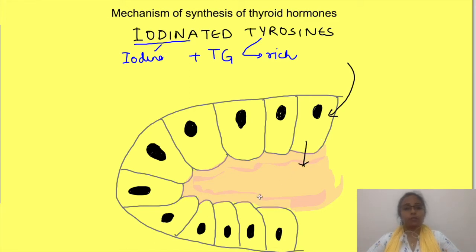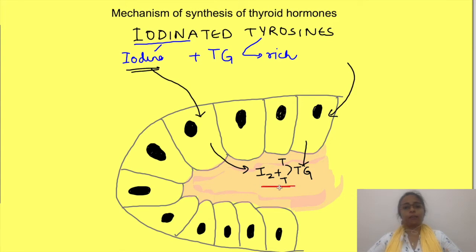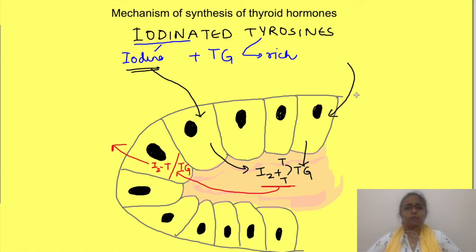For synthesis of thyroid hormones to occur, thyroid follicular cells should capture the iodide from blood, transport it to the colloid, and cause binding of the iodine to the tyrosine residues of the thyroglobulin protein. For release of thyroid hormones, follicular cells should take this iodinated substance from the colloid, separate the thyroid hormones from thyroglobulin, and release them into the blood. So synthesis of thyroid hormones takes place in several steps, and we will see each one separately.